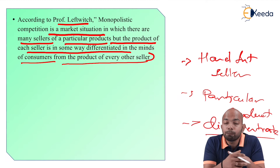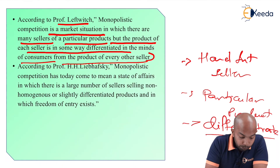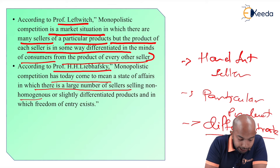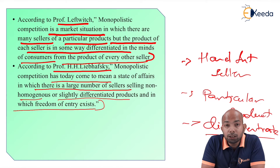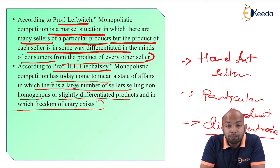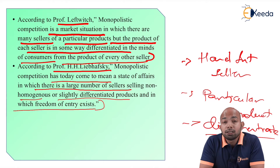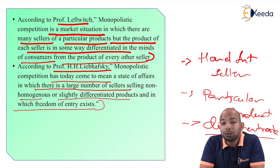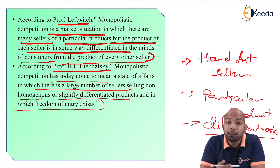According to Professor H.H. Levarsky, monopolistic competition has come to mean a state of affairs in which there is a large number of sellers selling non-homogeneous or slightly differentiated products, and in which freedom of entry exists. For instance, Kia is a new car manufacturer coming into India, similar to MG Hector, Haval from China, and General Motors re-entering India. These represent the free entry that still exists in such competition.